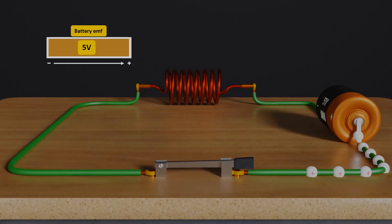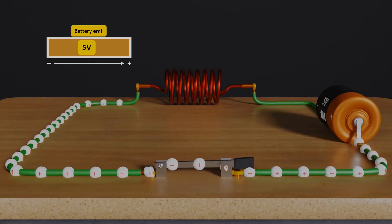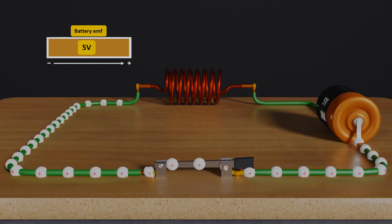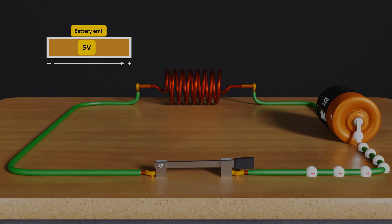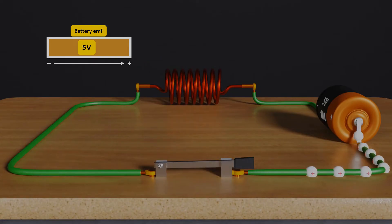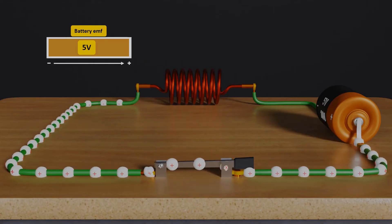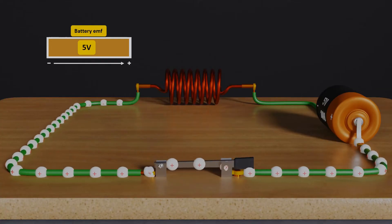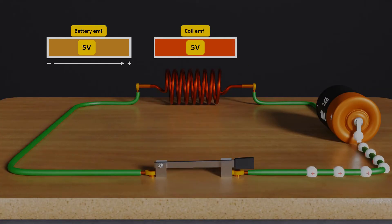And we know that Faraday's second law of electromagnetic induction tells us that the magnitude of EMF and current induced depends upon how rapidly the magnetic flux changes, that is the rate of change of magnetic flux. Therefore, a coil induces 1 ampere of current and EMF of 5 volts like the battery.